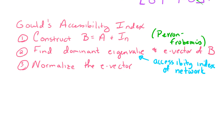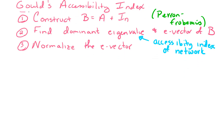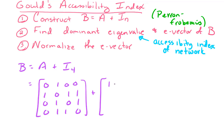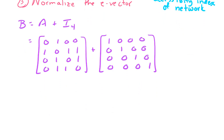Let's go through and do these steps. We construct matrix B by taking A and adding the 4 by 4 identity matrix. Matrix A is [0,1,0,0; 1,0,1,0; 0,1,0,1; 0,1,1,0]. Adding the 4 by 4 identity matrix — which has 1s down the main diagonal and 0s everywhere else — gives us matrix B: [1,1,0,0; 1,1,1,1; 0,1,1,1; 0,1,1,1].